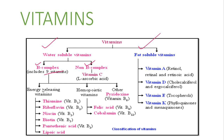The B-complex vitamins are further divided into energy-releasing vitamins, hematopoietic vitamins, and other vitamins. Energy-releasing vitamins include vitamin B1 thiamine, vitamin B2 riboflavin, vitamin B3 niacin, vitamin B7 biotin, vitamin B5 pantothenic acid, and lipoic acid. Vitamin B9 and B12 fall under hematopoietic vitamins.